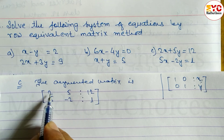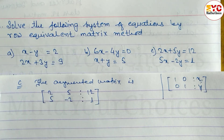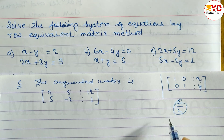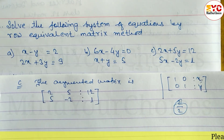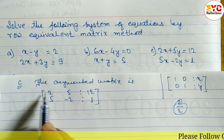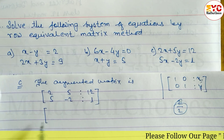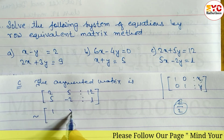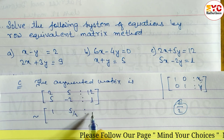By the first row operation R1, we divide R1 by 2. So 2 divided by 2 is 1, 5 divided by 2 is 5/2, and 12 divided by 2 is 6. So the new R1 becomes: 1, 5/2, 6. R2 remains the same: 5, minus 2, 1.